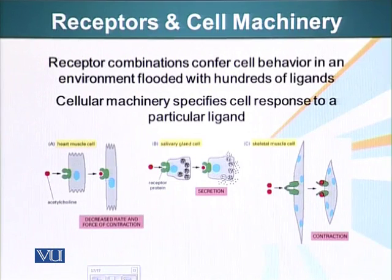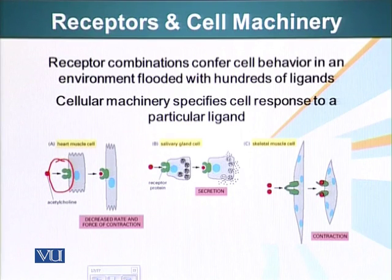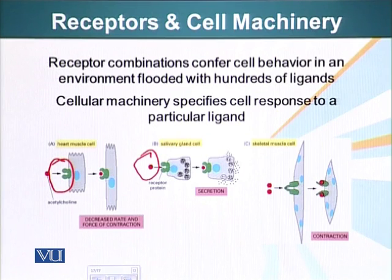I would like to mention that signaling molecules, when they interact with a receptor, can cause different changes in different cells. It all depends on what type of machinery is inside the cell that is going to read the signaling. For example, when acetylcholine — a signaling molecule produced by nerves — binds its receptor on heart muscle cells, it decreases the rate or force of contraction.